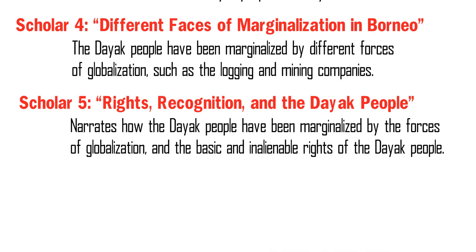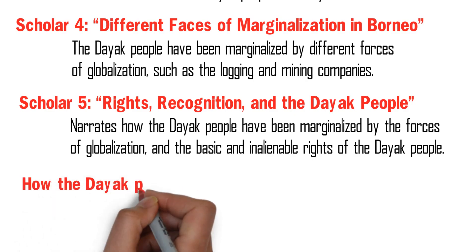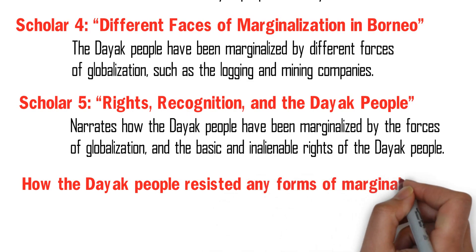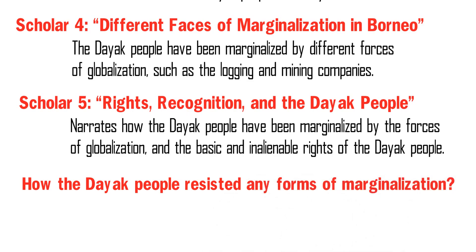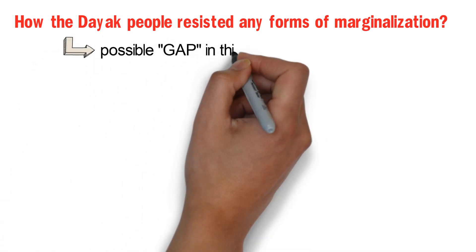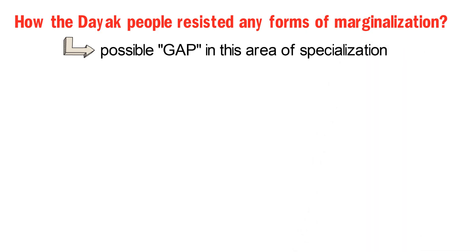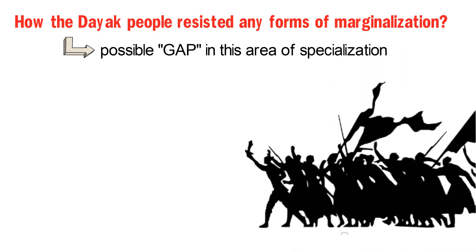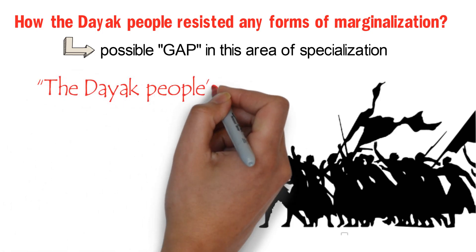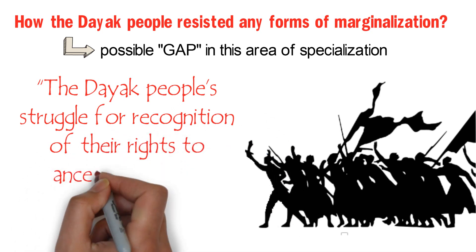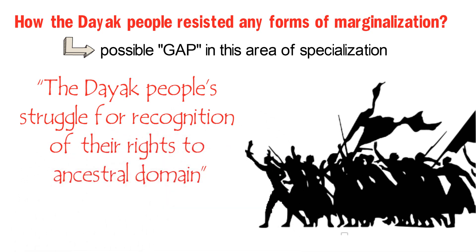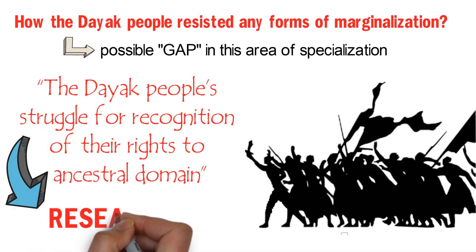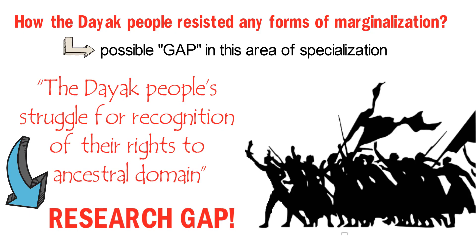After reviewing these important pieces of literature about the marginalization of the Dayak people, one may realize that no scholar has yet done research on the way in which the Dayak people resisted any forms of marginalization. Hence, this could be a possible gap in this area of specialization that researchers can work on. For this reason, one may work, for example, on the Dayak people's struggle for recognition of their rights to ancestral domain. This is a concrete example of a research gap that researchers can fill in.